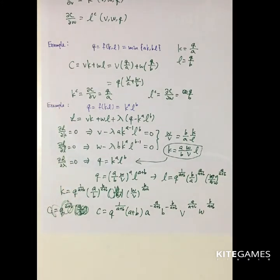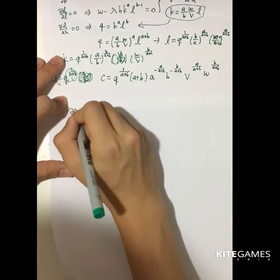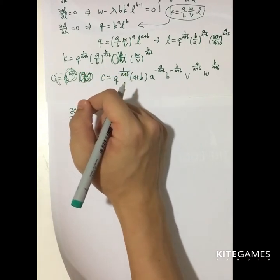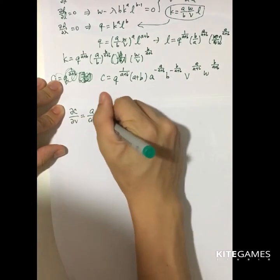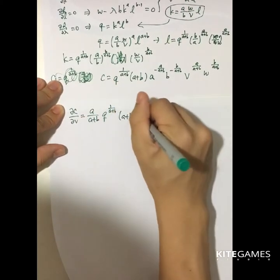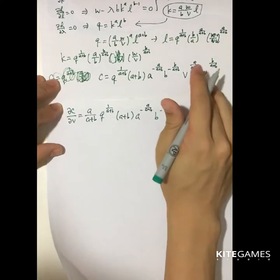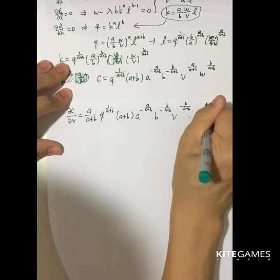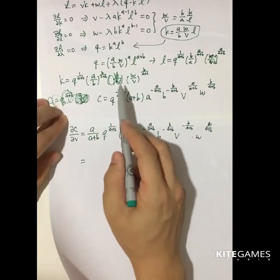To verify, the contingent demand for capital should equal partial C partial V. So we take partial C partial V of the Cobb-Douglas cost function. This is basic calculus — we get A over A plus B times all the multiplicative terms, with the exponent on V becoming negative B over A plus B, times W to the appropriate power.